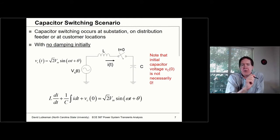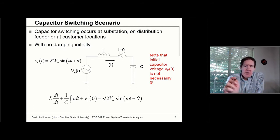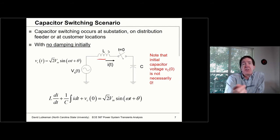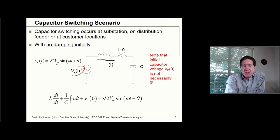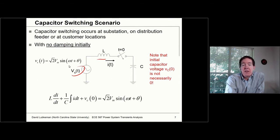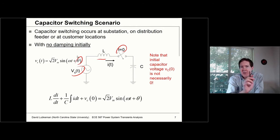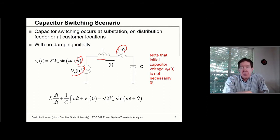The simplest scenario for looking at capacitor switching is to start by ignoring the resistance. The inductance here would be associated with the substation — a combination of the transformer and transmission system impedance. We have a sinusoidal source voltage of the form √2·Vm·sin(ωt + θ), and the switching action occurs at time equals zero. The point on wave is modeled by θ — remember, the switching doesn't have to occur at a voltage zero crossing; it could occur at any point on wave.